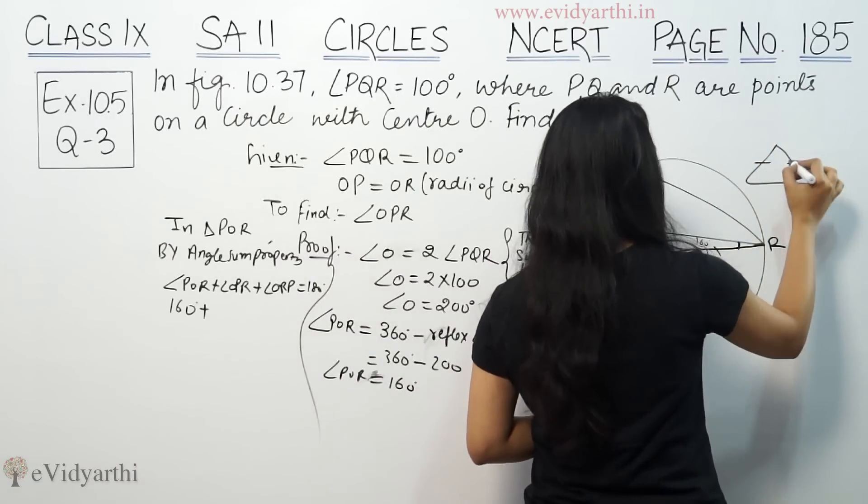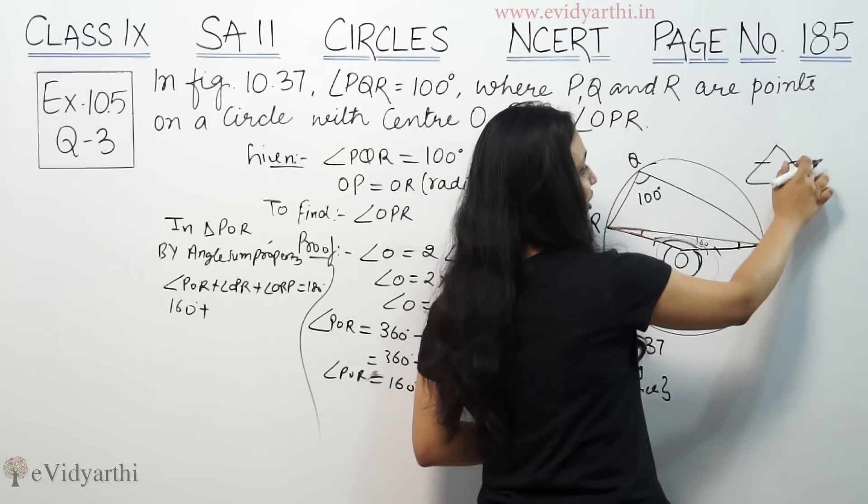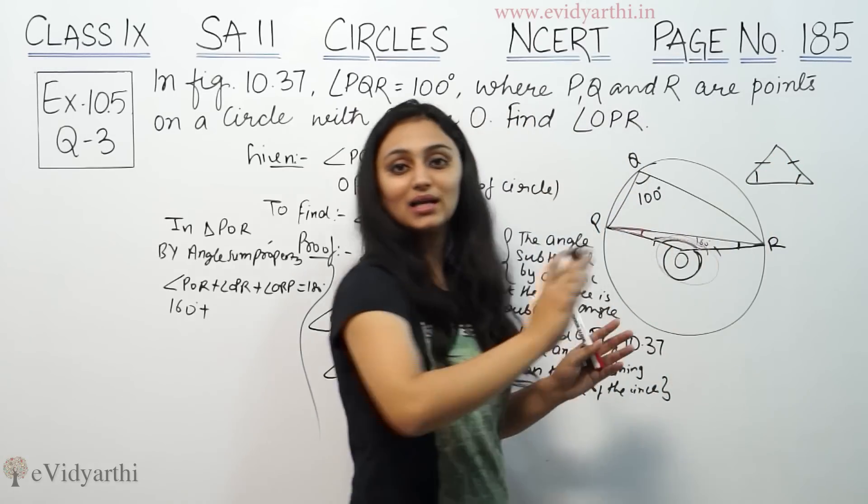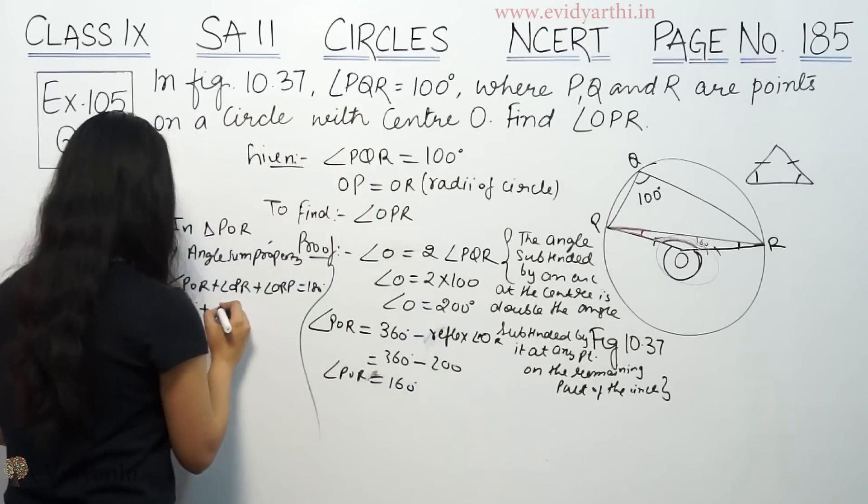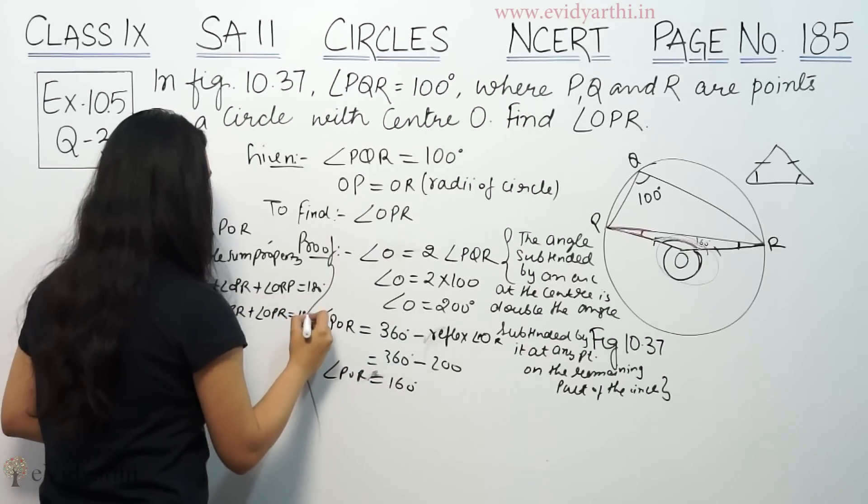I am going to use isosceles triangle. So if this is isosceles triangle, look at this angle and this angle, the angles are equal. So this is OPR plus OPR, we are going to write both OPR, equals 180.